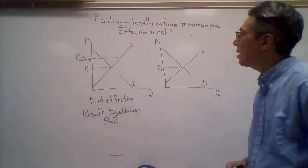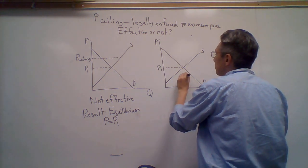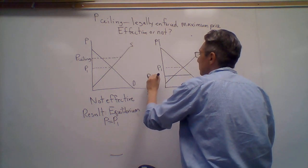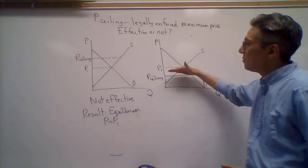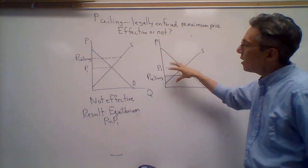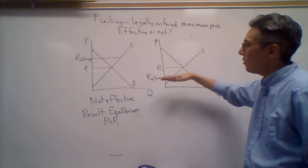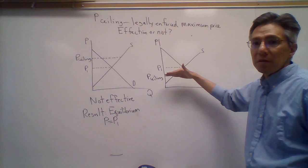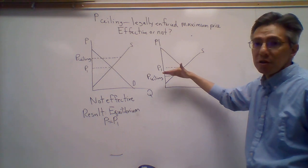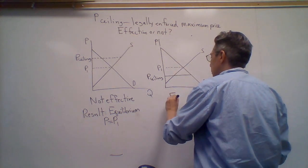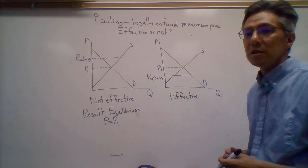So in contrast, what happens if the price ceiling is below the equilibrium? In this case, what you're saying is essentially you can't charge a price above this level. So imagine, you know, for gas, the equilibrium price suppose is about three dollars. If you have a price ceiling of two dollars, that is going to be an effective price ceiling. Technically the market wants to charge three, but they won't be able to. They have to charge two.